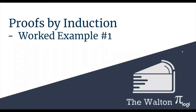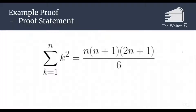Welcome to the Walton Pi. Today we are going to go through an example of an inductive proof. Our example today is going to be showing that the sum from k equals 1 to n of k squared is equal to n times n plus 1 times 2n plus 1 all over 6.